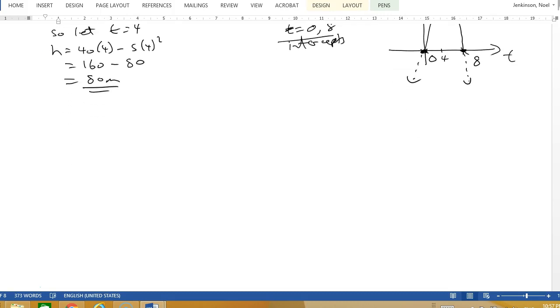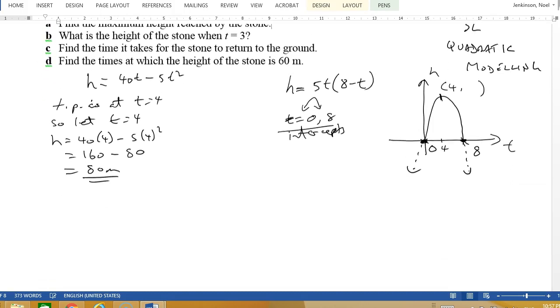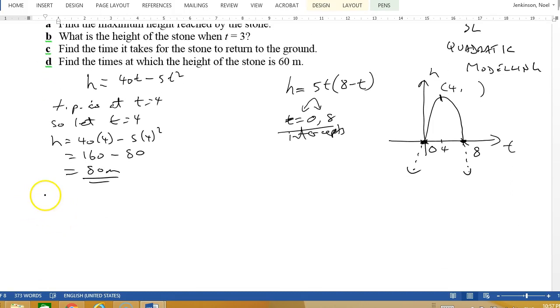The second question, part B, says what's the height when t equals 3? Well that's pretty easy. We just calculate by substituting t equals 3: h equals 40(3) minus 5(3)². The height will be 120 minus 45, which is 75 meters.